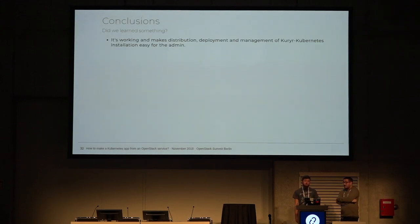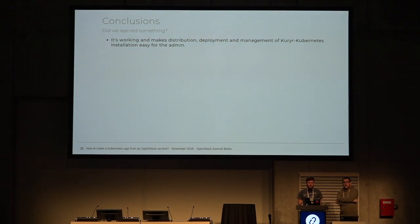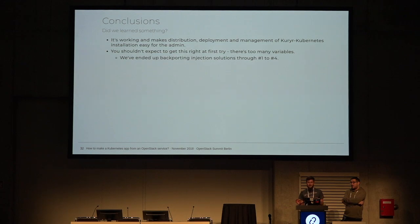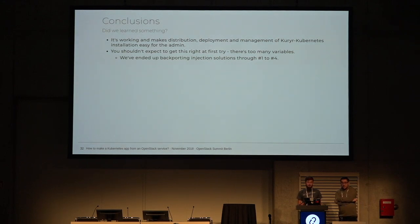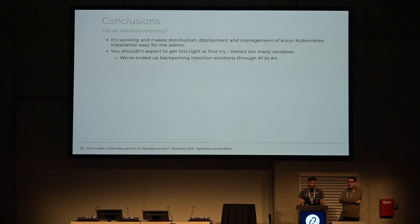The conclusions: basically, it makes the distribution and management of Kuryr Kubernetes easier. We didn't get it right at first - the problem was we ended up backporting. This solution came up in Queens, but we kept fixing it all the way through Rocky and backporting each of the approaches we tried. It was a fairly big backport. Especially debugging that OVS issue - that was awful.